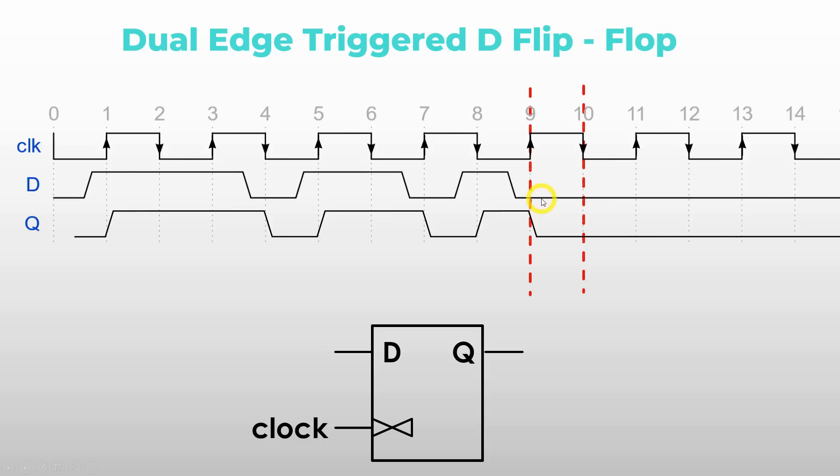For example, if there would be an input D signal between the rising edge and falling edge, the dual edge triggered flip-flop would not be able to catch this. So, it's important to design your clock frequency so you would be able to catch at least one of those.